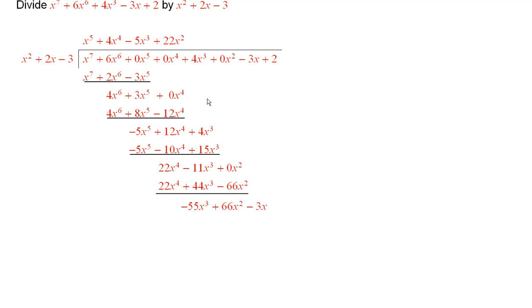And then the next term to put up here will be what? Minus 55. And I guess we'll need an x there, won't we? So I'll have minus 55x times x squared will be minus 55x cubed.